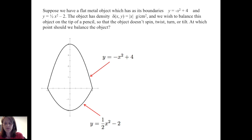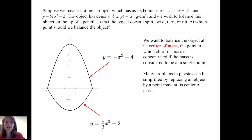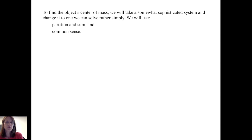We want to balance the object at its center of mass — the point at which all of its mass is concentrated if the mass is considered to be at a single point. Many problems in physics can be simplified by replacing an object by a point mass at its center of mass. We're going to first consider something much simpler, taking a sophisticated system and changing it to one we can solve rather simply, using partition and sum as well as common sense.